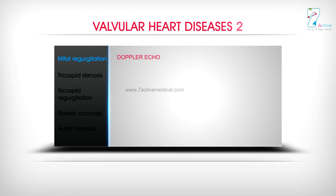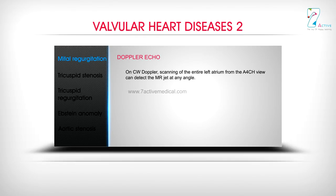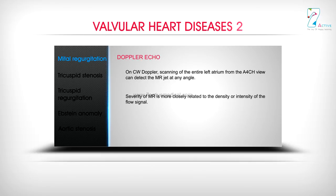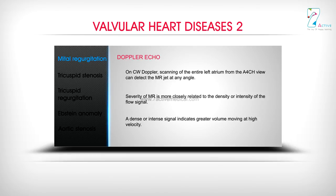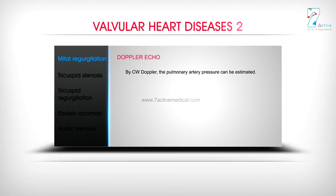Doppler Echo: On CW Doppler, scanning of the entire left atrium from the A4CH view can detect the MR jet at any angle. Severity of MR is more closely related to the density or intensity of the flow signal — a dense or intense signal indicates greater volume moving at high velocity. By CW Doppler, the pulmonary artery pressure can also be estimated.